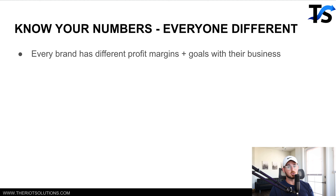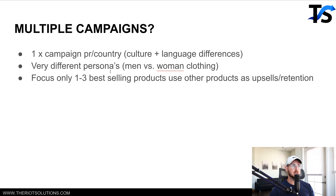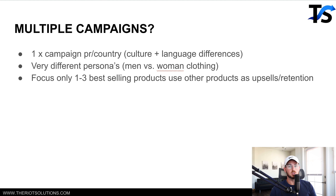Now that you know your numbers, let's look at account structure. Our account structure is very simple: one CBO campaign with a main ad set containing all our winning ads, and then two dynamic ad sets at a time to test new ads. Some people ask, 'Do we need multiple CBO campaigns?' We'll do one campaign per country if there are culture and language differences. Where there are different languages and we have the creative ability to create specific creatives for that geo-location, we'll split into different campaigns.